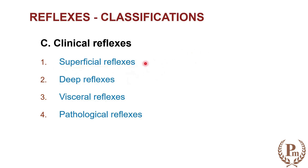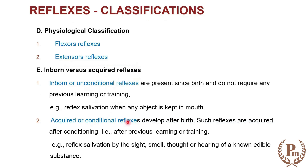For superficial reflexes, examples include plantar reflexes, corneal reflexes, light reflexes, and cremasteric reflexes. Deep tendon reflexes include biceps jerk, triceps jerk, and knee jerk. Visceral reflexes relate to internal organs — stomach, micturition, and defecation. There may also be abnormal or pathological reflexes. Another classification includes physiological ones like flexor reflexes or extensor reflexes.